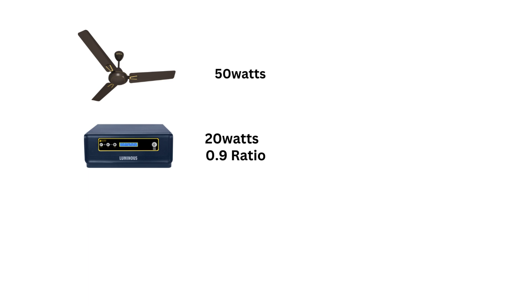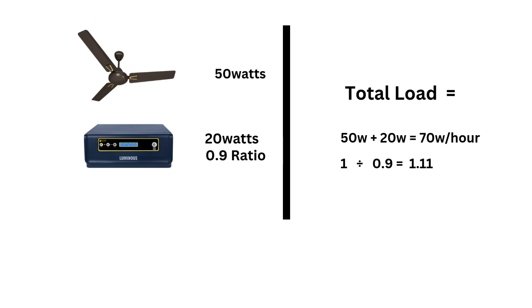Thus far, we have fan power rating 50 watts, power loss factor 20 watts, inverter efficiency 0.9 ratio. We'll work with these three factors to determine the total amount of load going on our battery bank. Load is measured in watts per hour. 50 watts plus 20 watts equals 70 watts per hour.